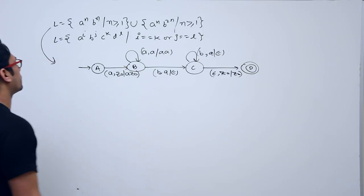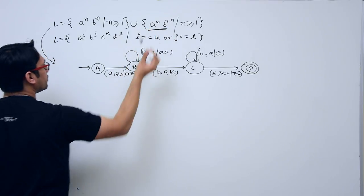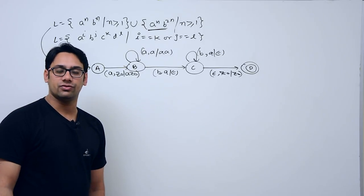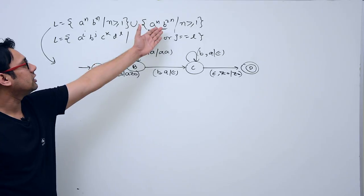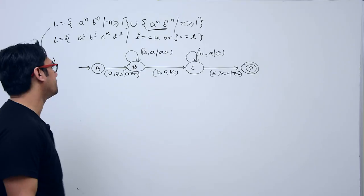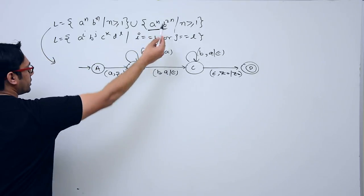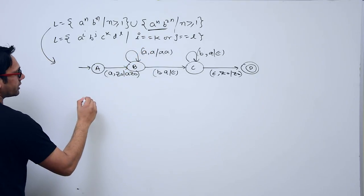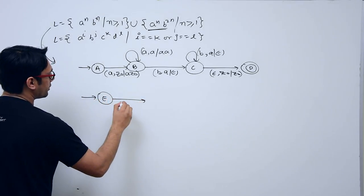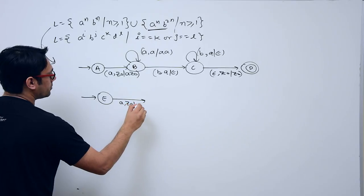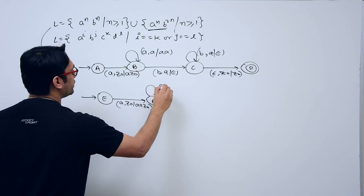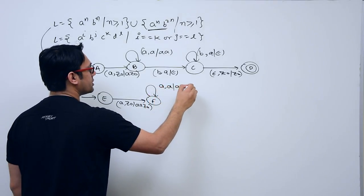This is for the first language (a^n b^n). For the second language (a^n b^2n), I already told you there are two methods: either push two a's instead of one 'a', or on every even 'b' pop one 'a'. Let us do it the first way. This is state a — if you get one 'a' and z-naught is on the stack, push two a's. Every time you get an 'a' and 'a' is on the stack, push two a's.